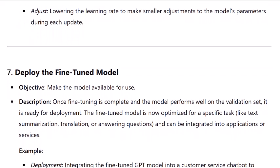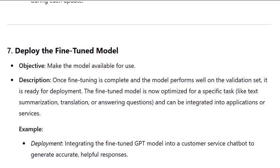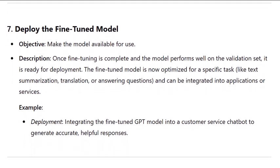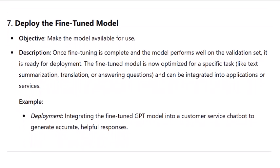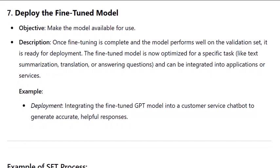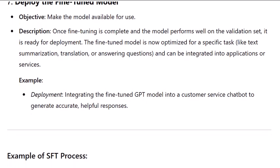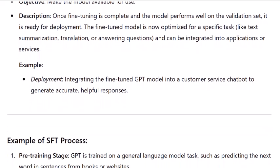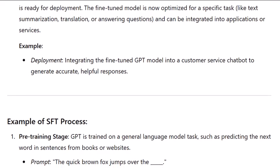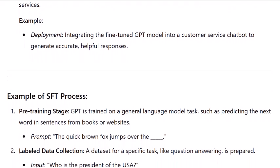Step seven: deploy the fine-tuned model. Objective: make the model available for use. Once fine-tuning is complete and the model performs well on the validation set, it is ready for deployment. The fine-tuned model is now optimized for a specific task, like text summarization, translation, or answering questions, and can be integrated into applications or services. Example deployment: integrating the fine-tuned GPT model into a customer service chatbot to generate accurate, helpful responses.